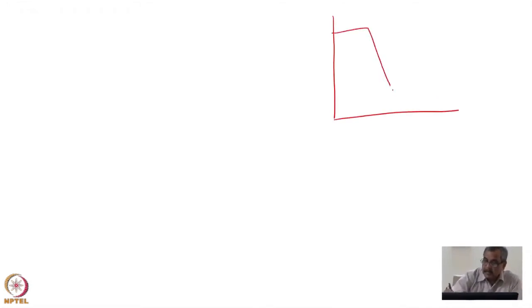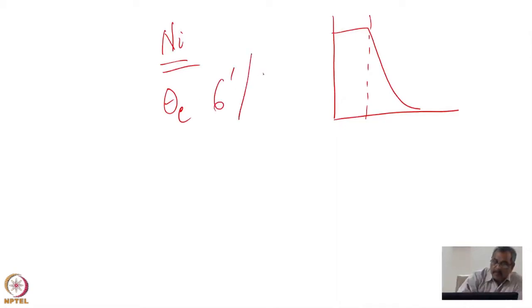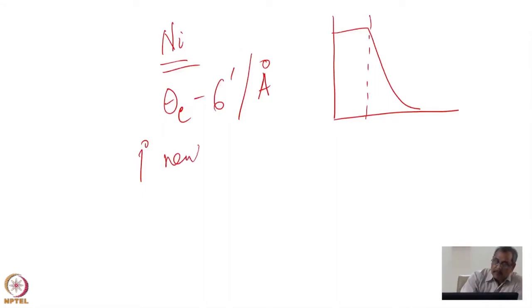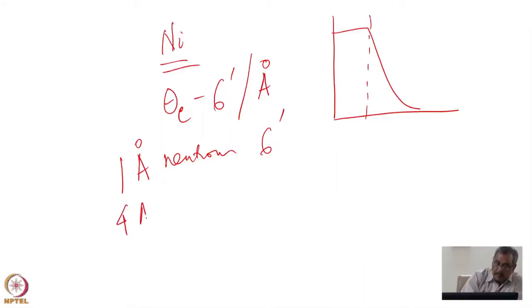Nickel is one of the best elements which gives a critical angle, and this critical angle is dependent on lambda linearly. This gives a critical angle of 6 arc minutes per angstrom. That means for a 1 angstrom neutron it will be 6 arc minutes, and for a 4 angstrom neutron it is 6 into 4, which is 24 arc minutes.